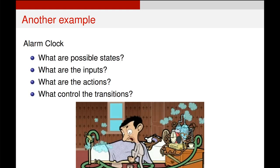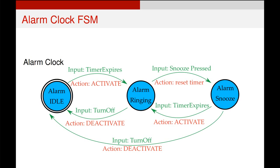If you've had a think about it, hopefully you came up with something that looks like this. In all likelihood you came up with something far more complicated, but what I was trying to capture here was the basic functionality of an alarm clock. My three states are idle, ringing, and snoozing. We start in the idle state, wait for the timer to expire — to reach that key time — and when we do, the alarm starts to activate, it starts ringing, and we go into the alarm ringing state.